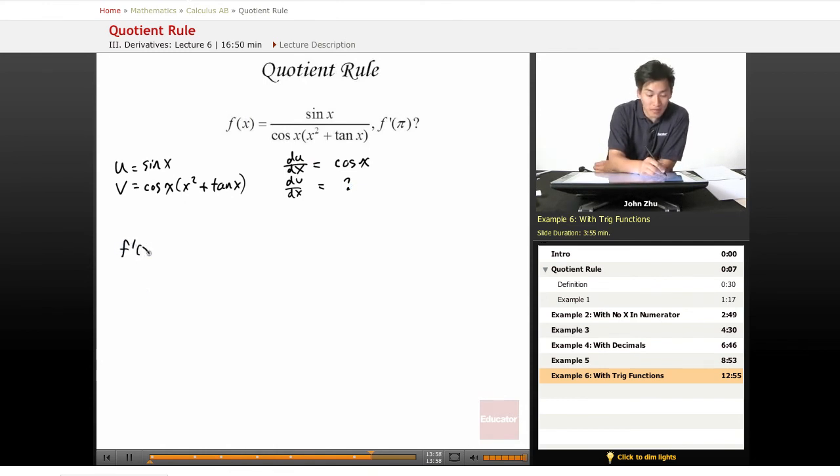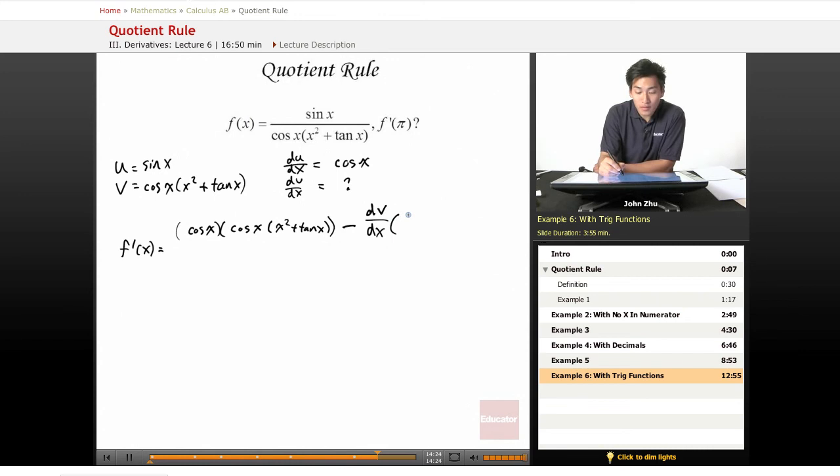So let's find the derivative of f of x. f prime of x equals derivative of u, so du dx cosine of x times the bottom portion, cosine of x times x squared plus tangent of x, minus dv dx, which we don't know yet, so we'll just plug in dv dx times the top portion u, which is sine of x, and that all gets divided by cosine of x times x squared plus tangent of x squared.